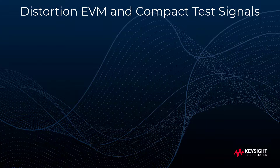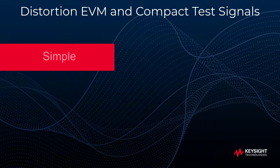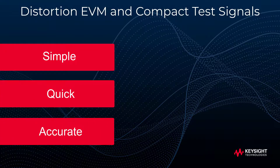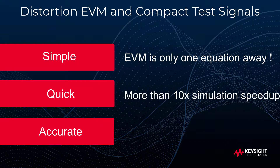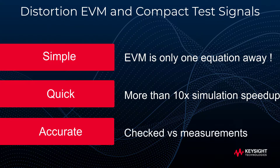As a summary, the combination of compact test signals and distortion EVM is meant to be simple, quick, and accurate. Simple, as it seamlessly brings EVM into the design phase for both ADS and GoldenGate, and obsoletes the usage of IP3, which is no longer a valid assumption for large channels. Quick, as you can now obtain results 10 to more than 100 times faster than before. Accurate, as this has been checked on both measurement and simulation sides to ensure good correlation between time and frequency domain EVMs. And with a lower runtime, you can also increase your test coverage. Thanks for watching!